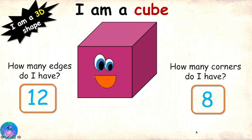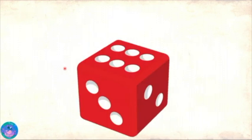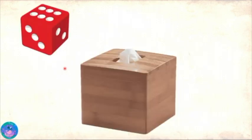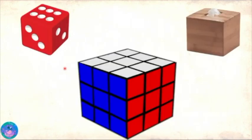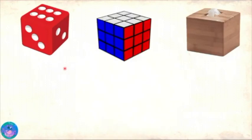Very good, Zoe — now you understand me well. Can you identify some objects that have my shape? Of course. A dice. The tissue box on my table. A Rubik's cube. All of these are cubes, or I can say that they are cubic. Well done. And now it is time for me to go.